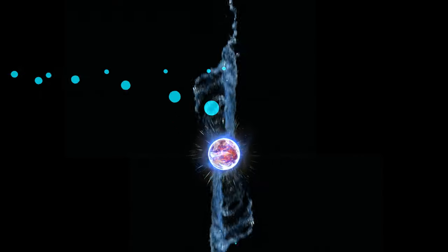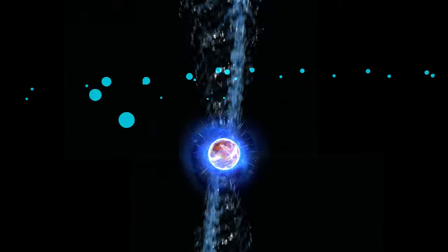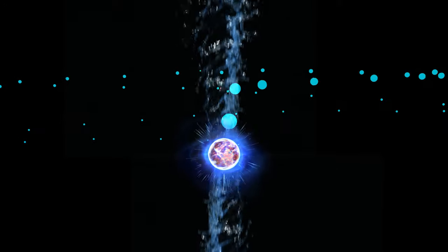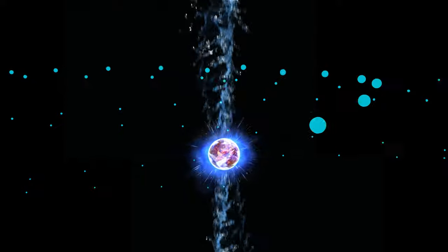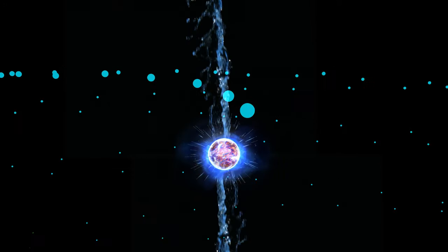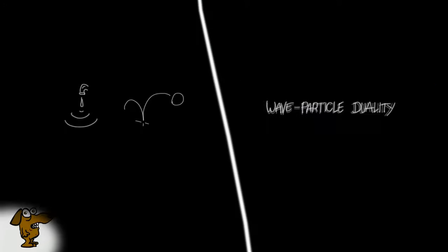This would be the equivalent of running our tennis ball experiment at night and getting completely different results. We know from many experiments that while electrons can exhibit both wave and particle-like behaviors, neither is a complete explanation. This is known as wave-particle duality.